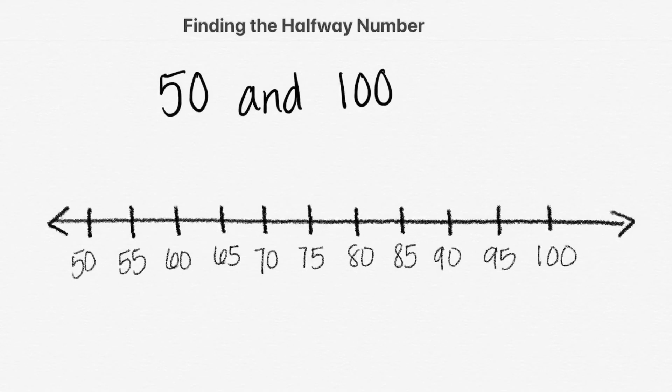Let's begin jumping inward from both ends: 1, 1, 2, 2, 3, 3, 4, 4, 5, 5. And that's where they meet halfway at 75. Halfway between 50 and 100 is 75.